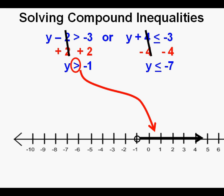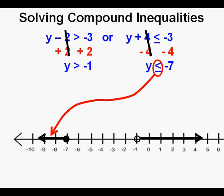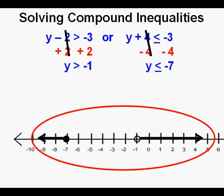For the other problem of the or, we first draw the solid point at negative 7. And since the symbol is to the left, we draw the arrow to the left. And so this is what the or looks like, with arrows going in opposite directions. That's the key characteristic.